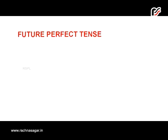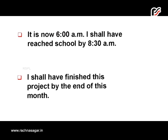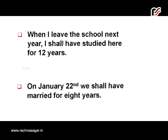Future perfect tense is used to describe an action that will be completed at some point in the future. For example: 'I shall have reached school by 8:30am' and 'I shall have finished this project by the end of this month.' This tense indicates an action completed before a certain time or another action in the future, and is often associated with the preposition 'by.' It also indicates duration up to a time in the future — for example, 'When I leave school next year, I shall have studied here for 12 years.'